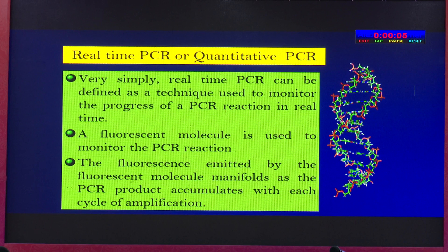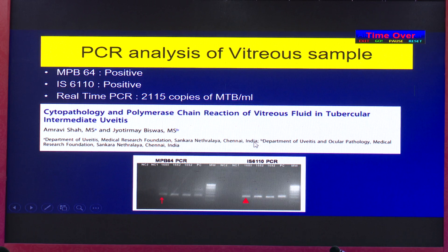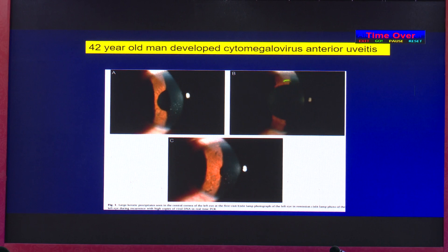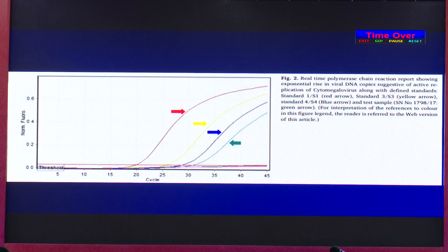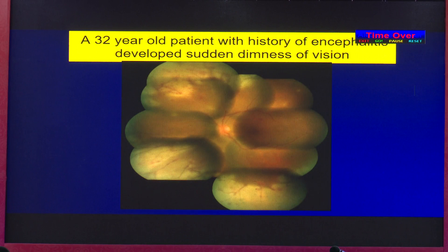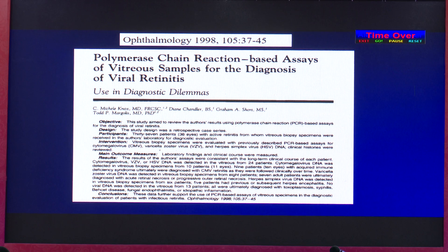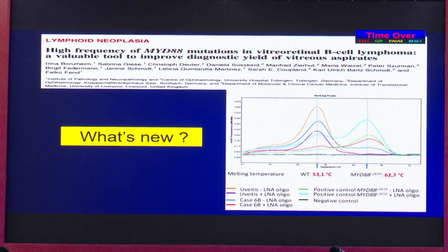Next is real-time PCR or quantitative PCR — a technique that is a progression of standard PCR, performing the PCR reaction in real-time using a fluorescent molecule. This was applied in a case of cytomegalovirus anterior uveitis and in a 32-year-old patient with history of encephalitis and necrotizing retinitis. Semi-quantitative PCR was positive, and importantly the fluorescent curve showed 88,874 copies. Polymerase chain reaction-based assays can be very useful for diagnosing viral retinitis.